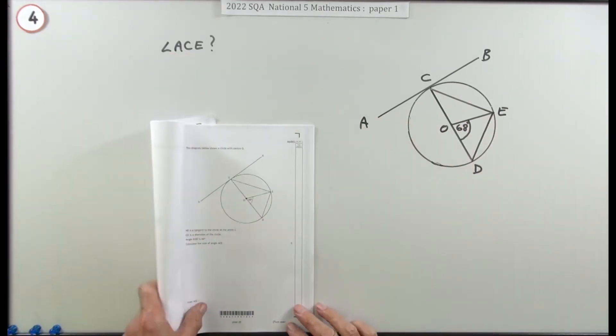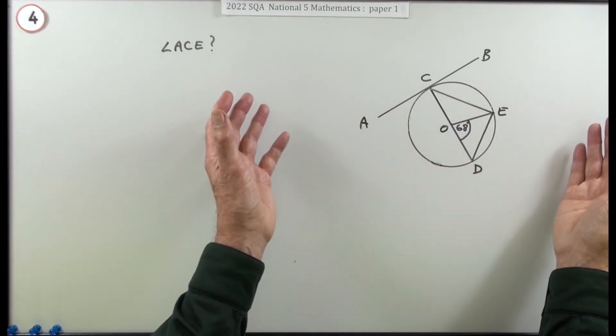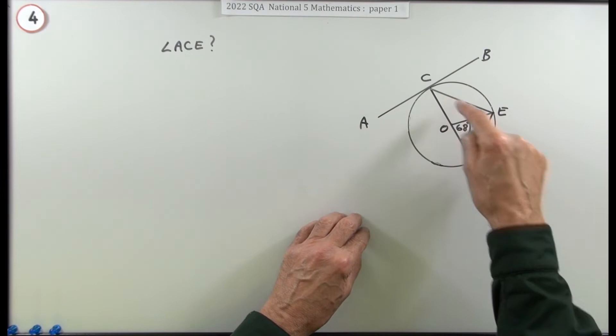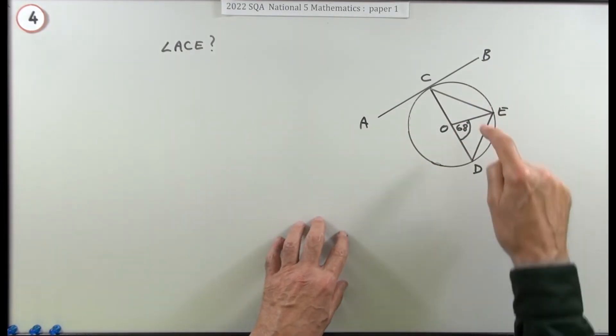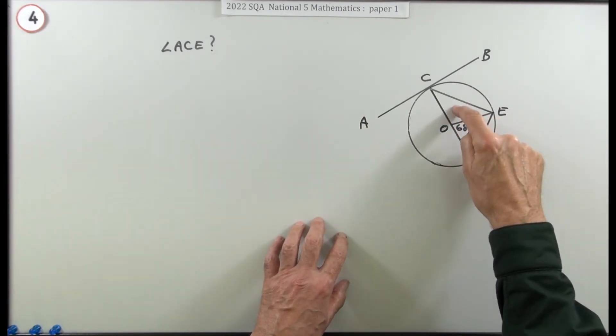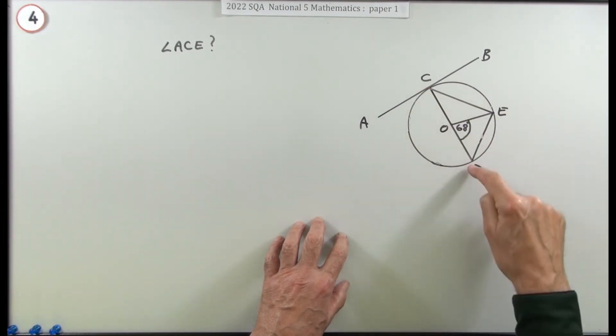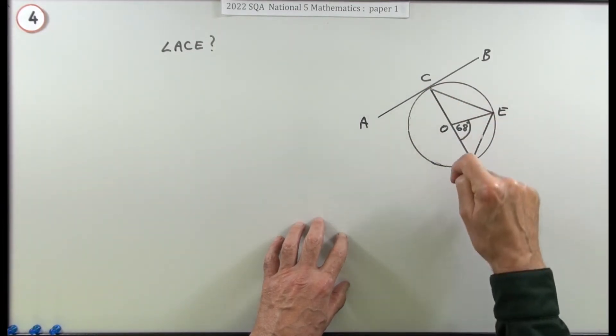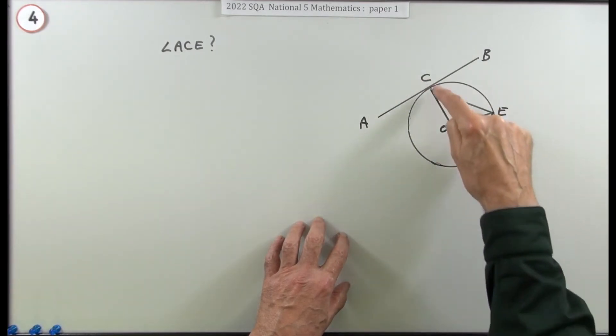What's the size of angle ACE? One thing you could do is just blitz the whole diagram - fill in every single angle and eventually you'll get to the one that you want. Because there are various patterns here: there are triangles, there are three triangles, there are two isosceles triangles (radius-radius, radius) and one large right-angled triangle.